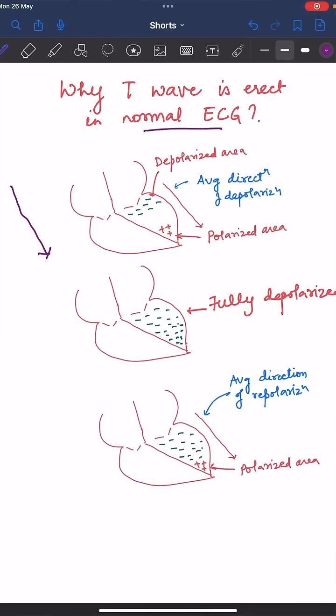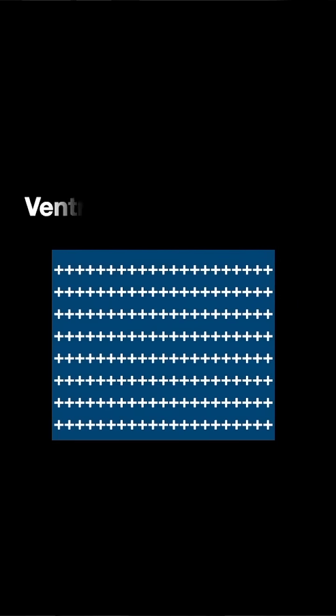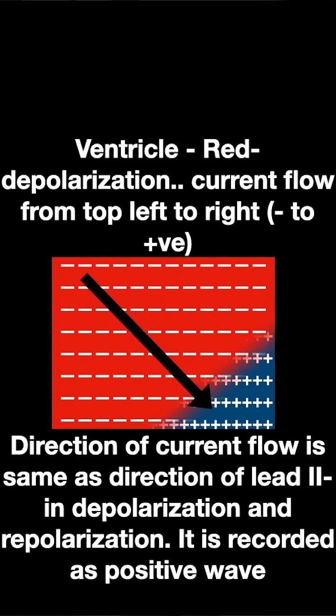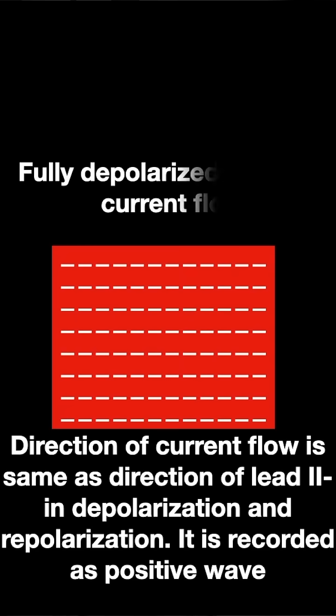If we consider Lead 2, this is the direction of Lead 2. The direction of depolarization goes from the area which is getting depolarized to the area which is at rest. As depolarization starts, it is negative here, and it flows from the depolarized area — which is negative — to the polarized area, which is positive outside. When it is fully depolarized, it is fully negative outside.